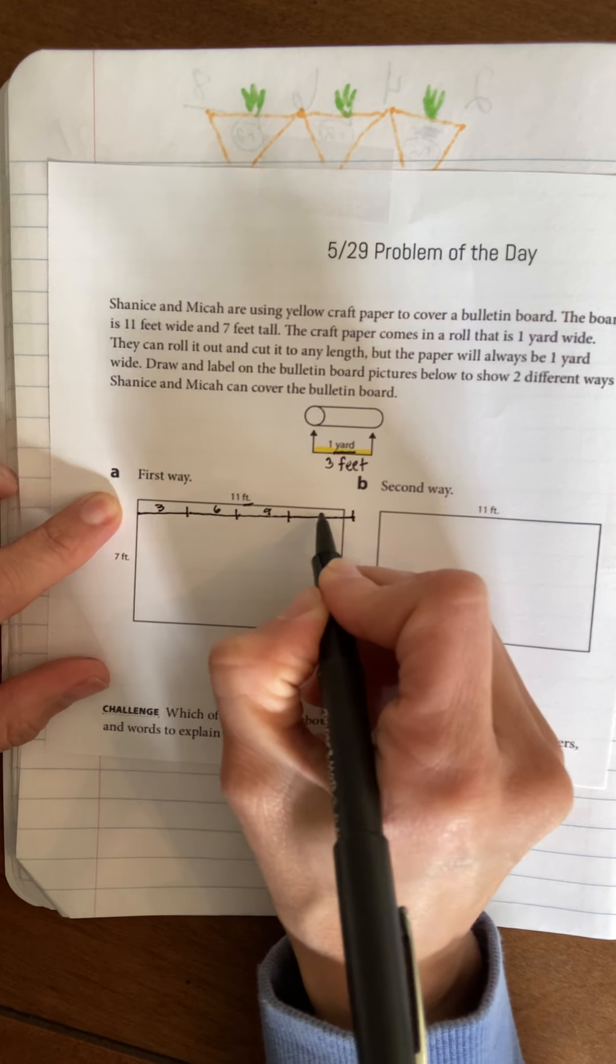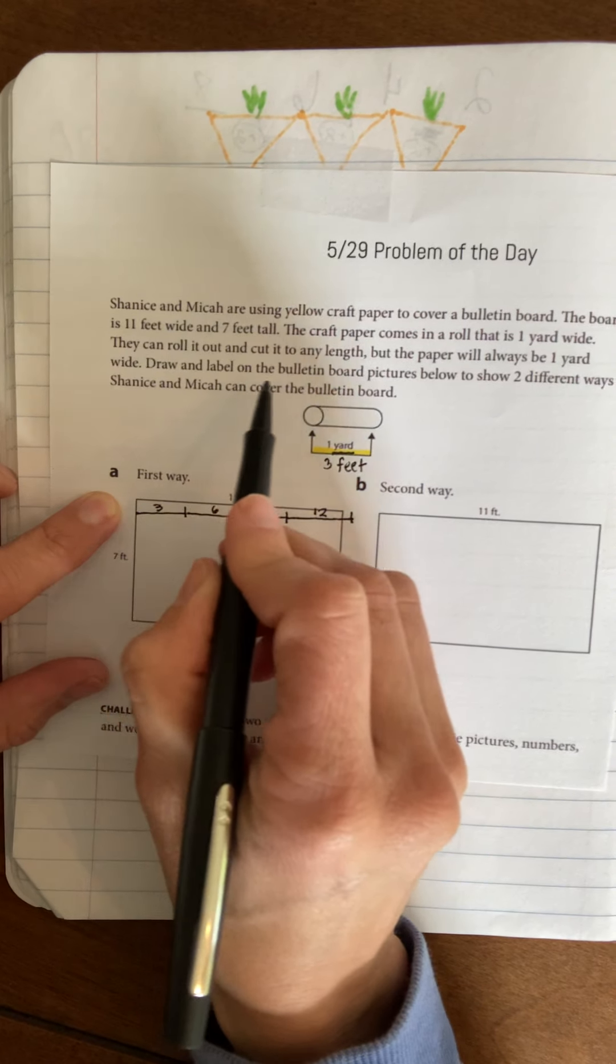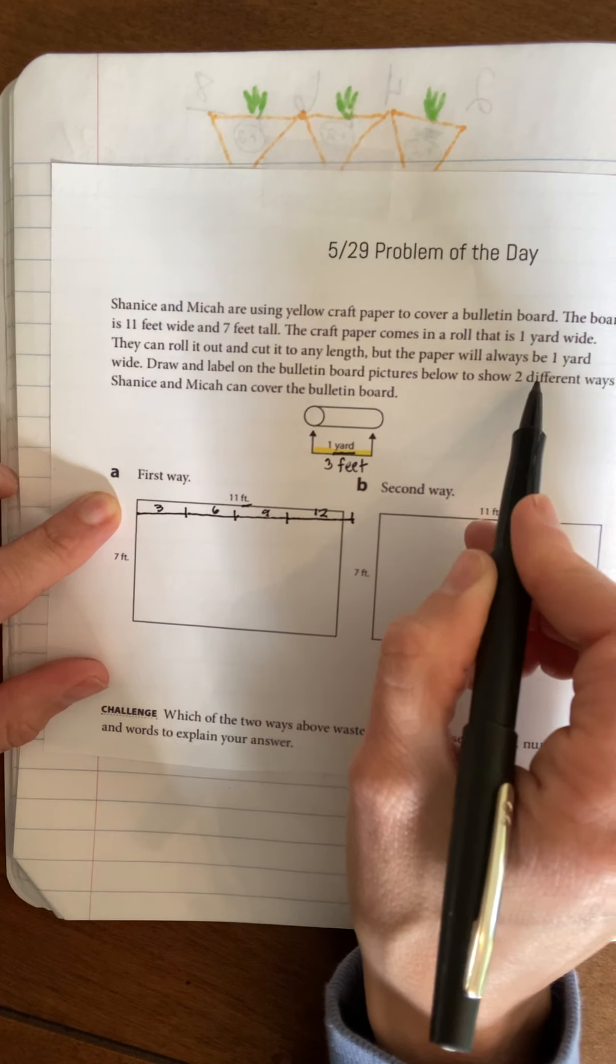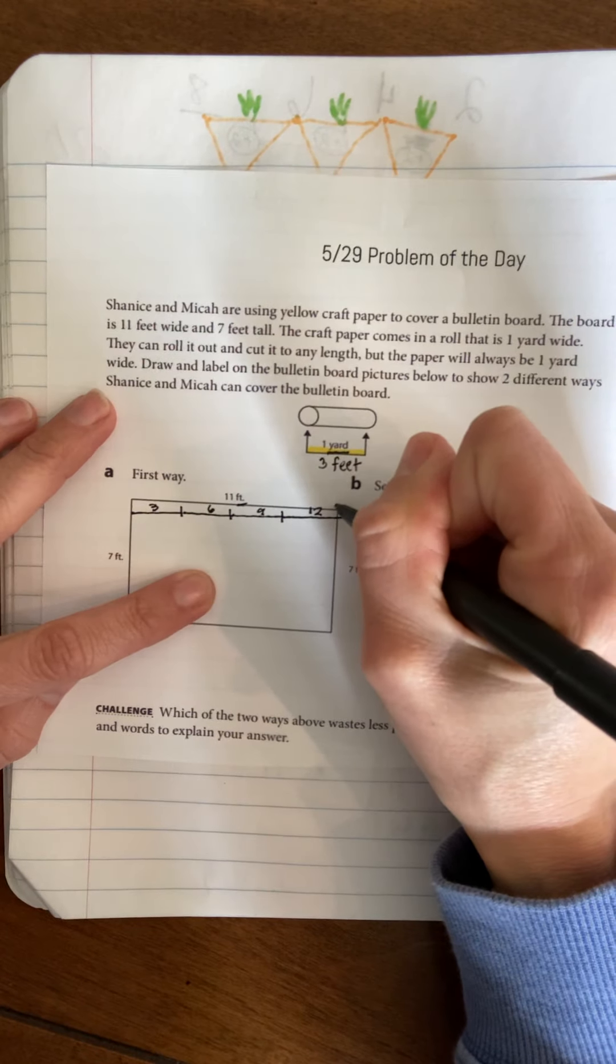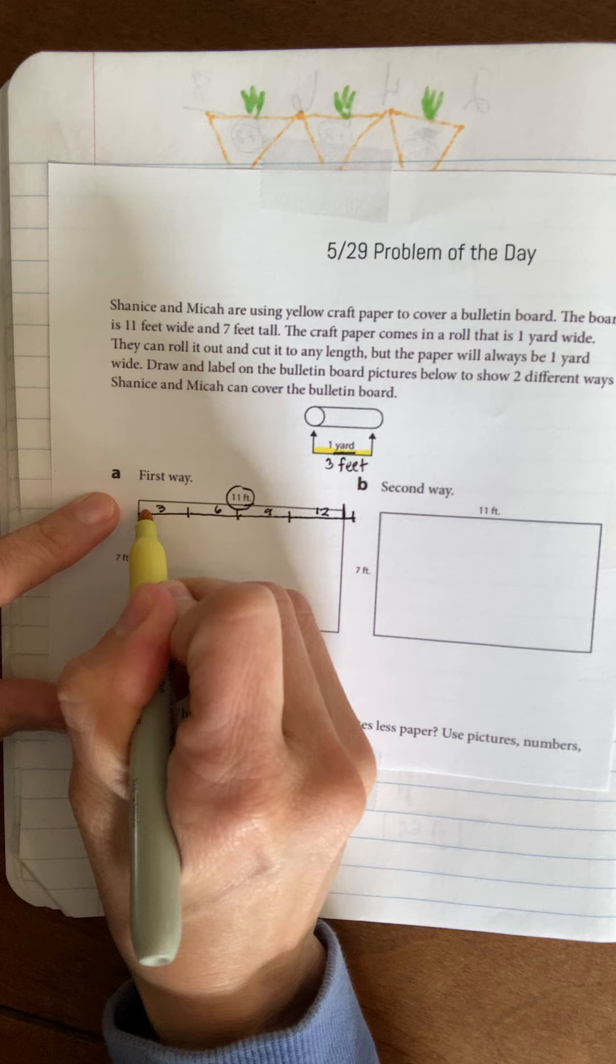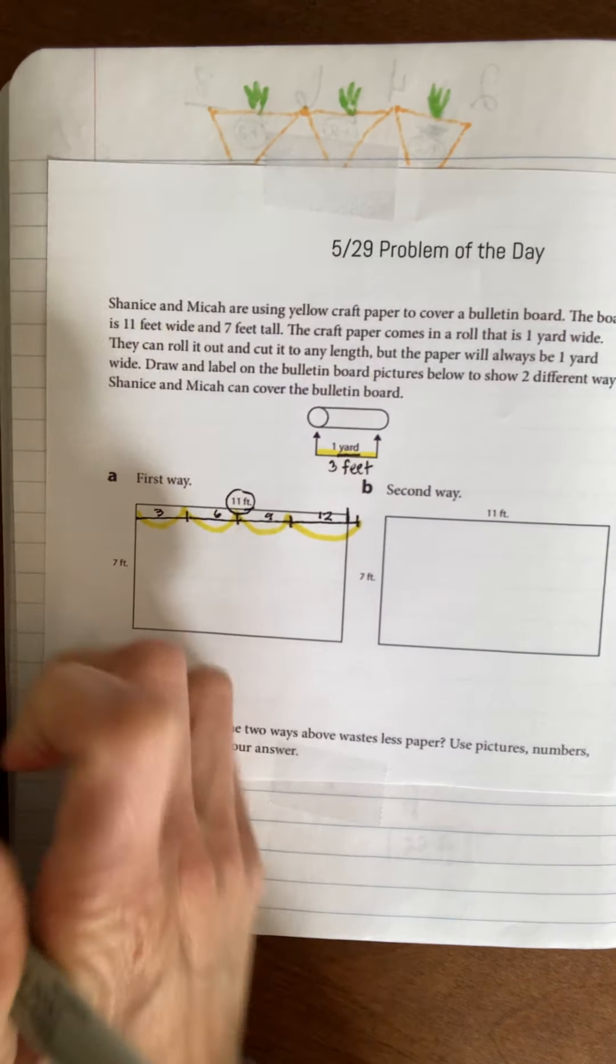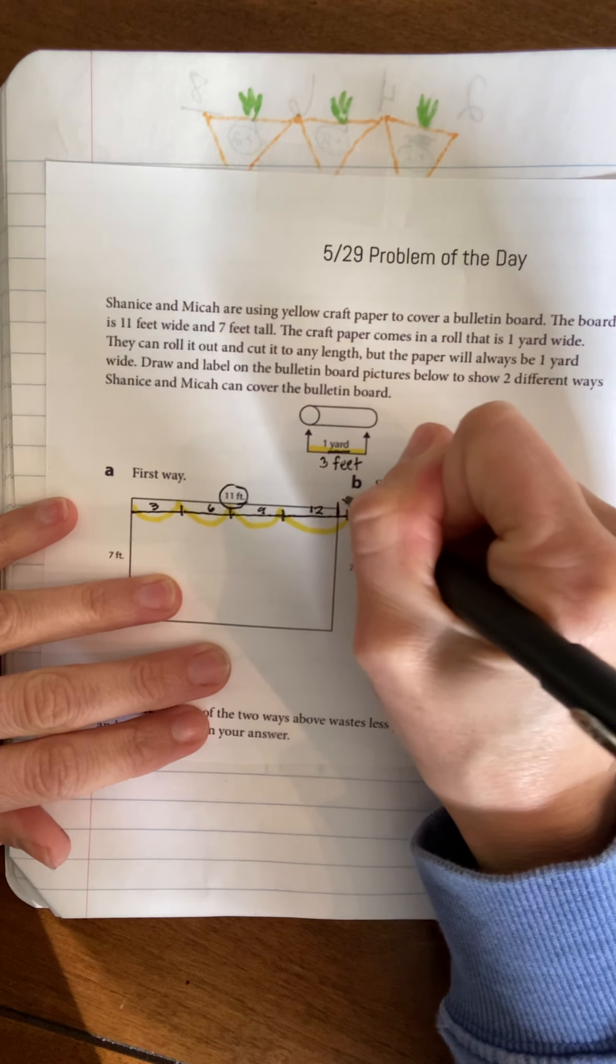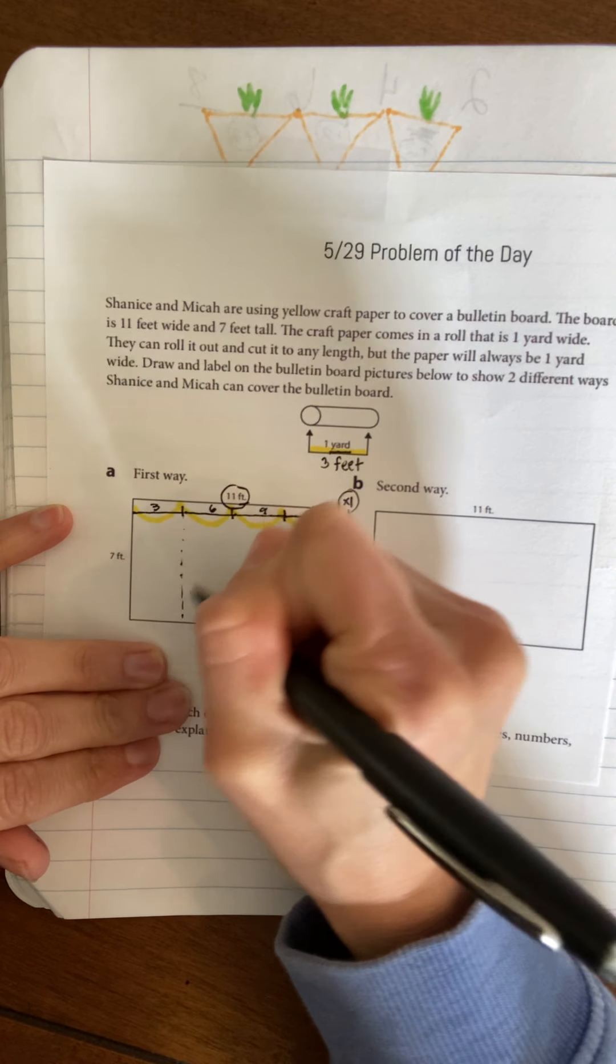It needs to always be one yard wide. Draw and label on the bulletin board pictures to show two different ways. They would need to take one foot, because this is only 11 feet wide. If I do three of them, I get 3, 6, 9 and I go a little bit over. So they would need to cut...